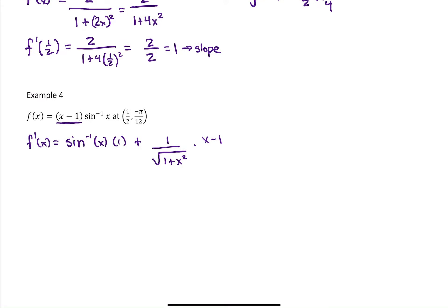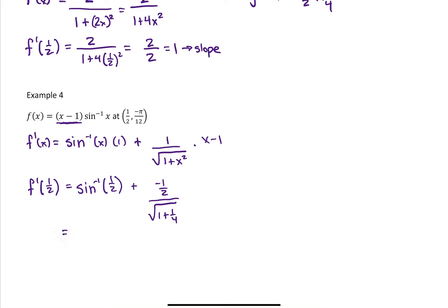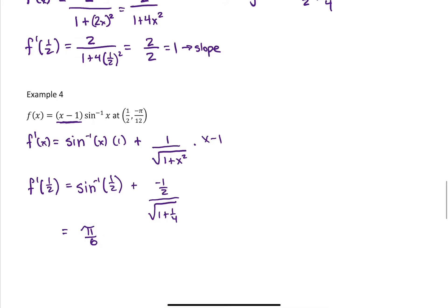We evaluate at x equals one-half. F prime of one-half is sine inverse of one-half plus (one-half minus 1), which is negative one-half, divided by the square root of 1 plus one-fourth. Sine inverse of one-half: the angle with a sine value of one-half is pi over 6. For the square root of 1 plus one-fourth: that's the square root of 5 over 4, which is the square root of 5 halves. So we have negative one-half divided by the square root of 5 over 2.